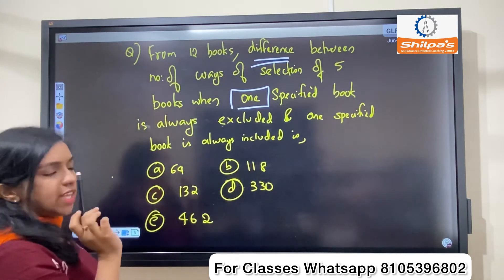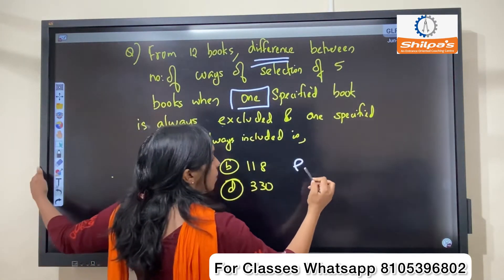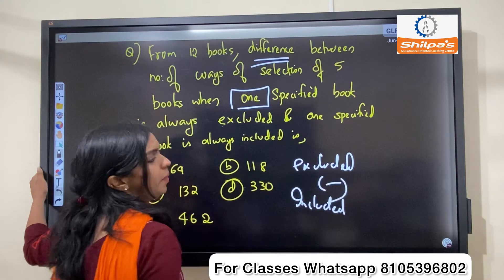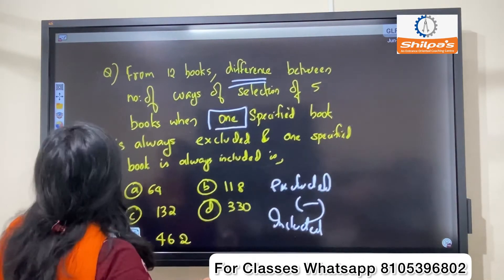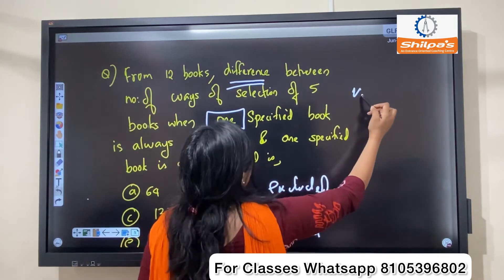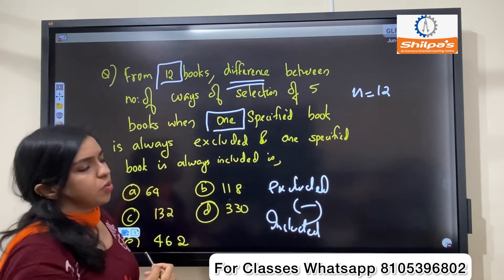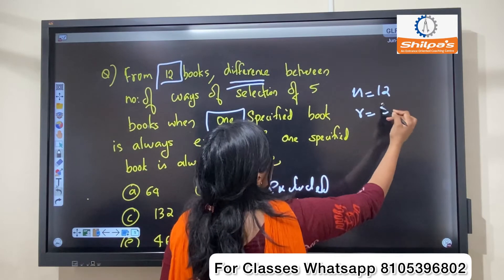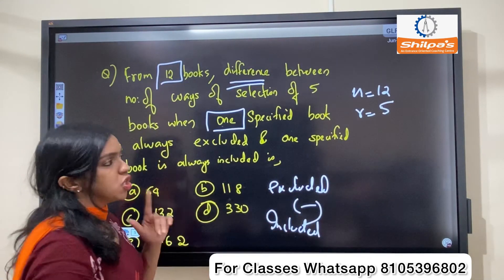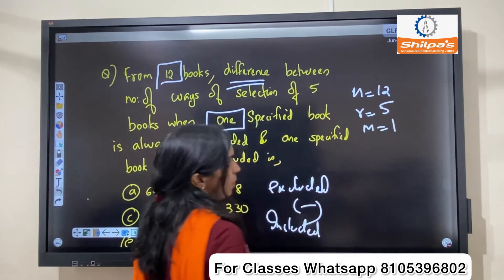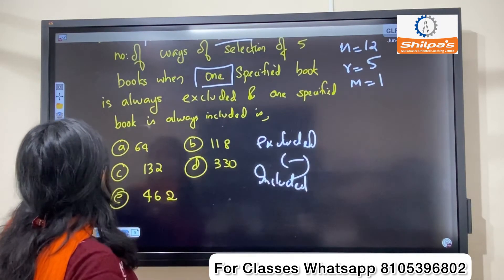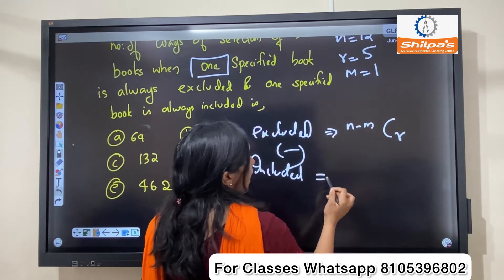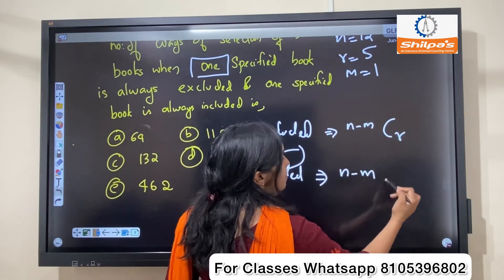This is the difference between exclude and include. So two minus here. We have formulae: excluded formula is n minus M C R; included formula is n minus M C R minus M. M which has value 1 now. We have these formulae for excluded and included.